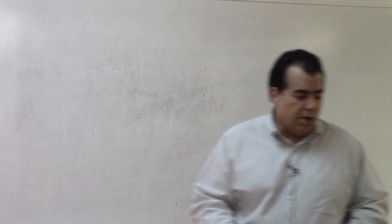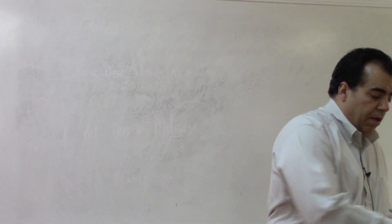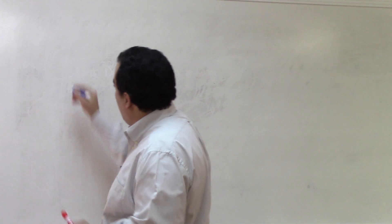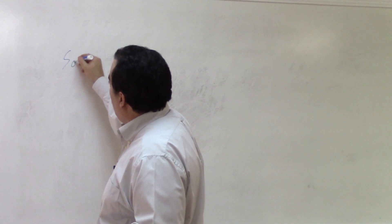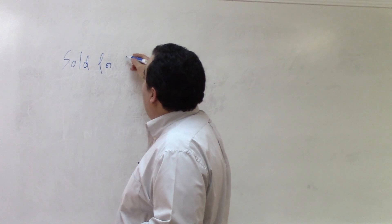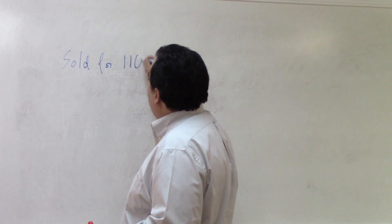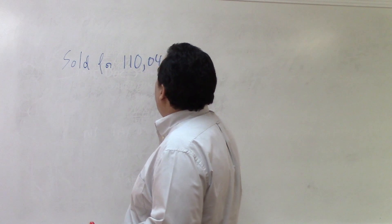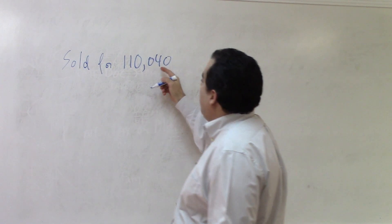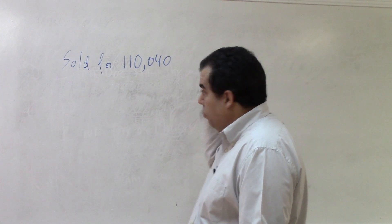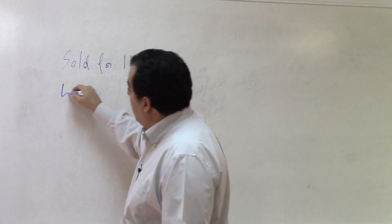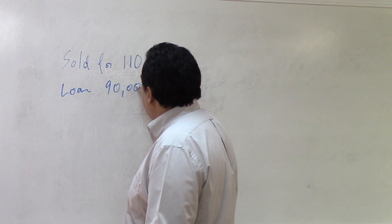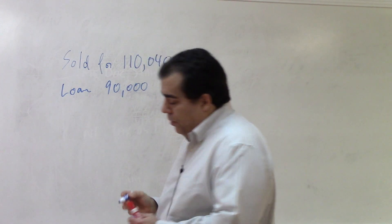Here's an example. Say I'm taking the state exam and I get a question asking me to calculate the total taxes due. The property is sold for $110,040 — that's the sales price — and there's a loan of $90,000.